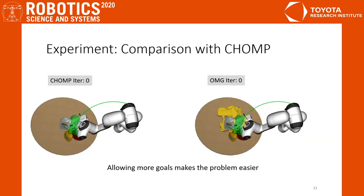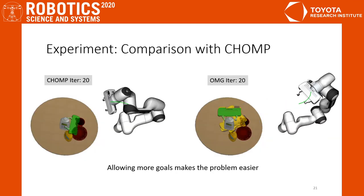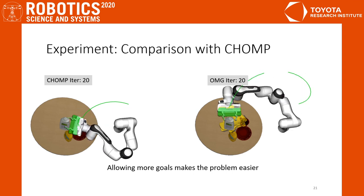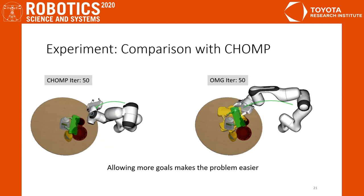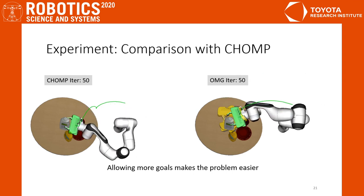Here we qualitatively show the optimization process of CHOMP and OMG. We see that our framework is optimizing in a much larger trajectory space than fixed endpoints.